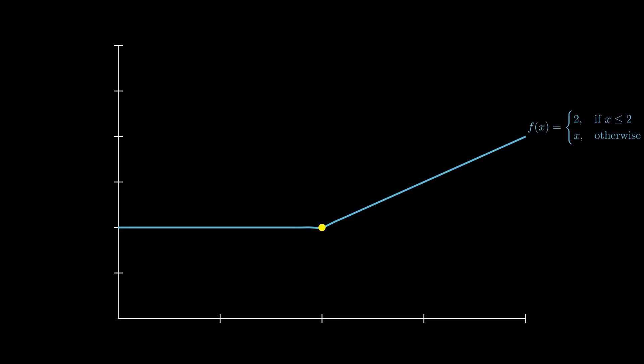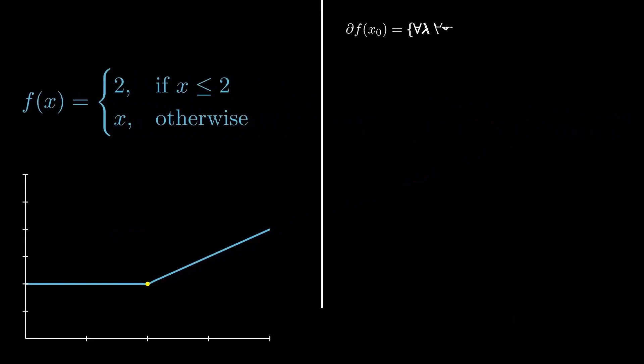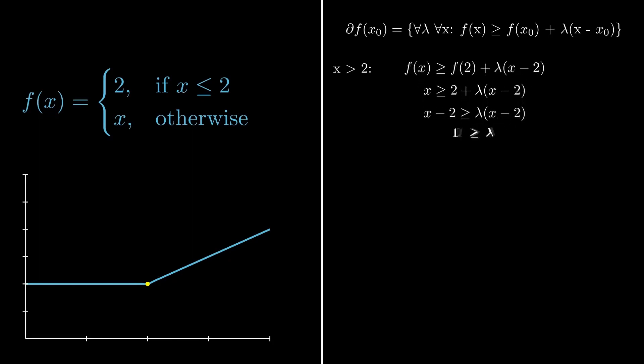You can also try this example by yourself and then compare it to the solution presented here. We can plug this into our previously established generalization, and after simplifying, end up with three different cases. If x is larger than 2, lambda has to be smaller or equal than 1.